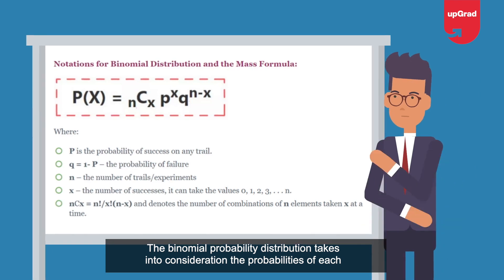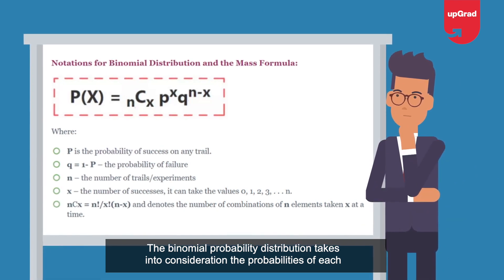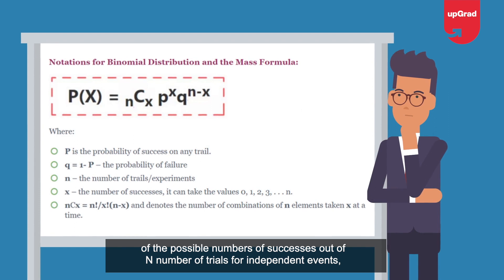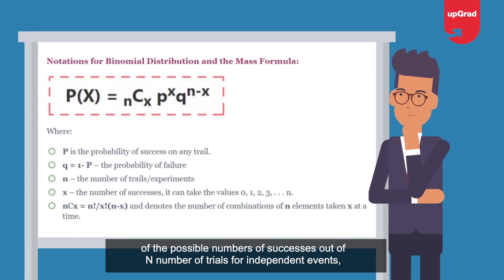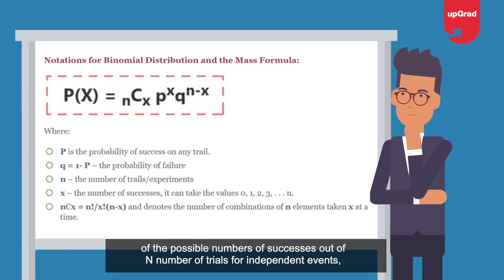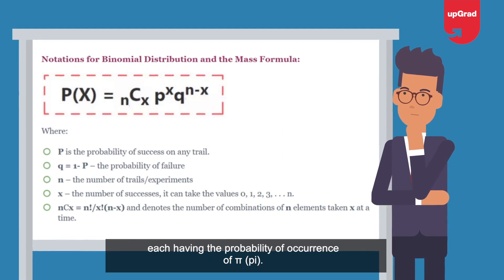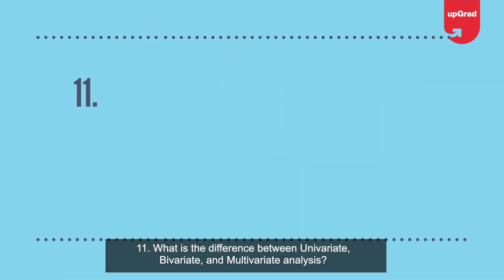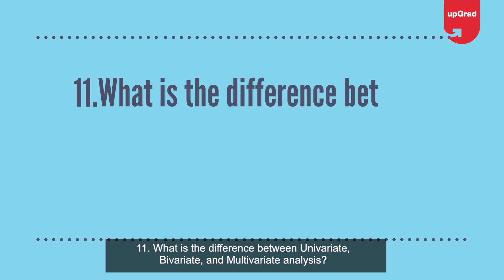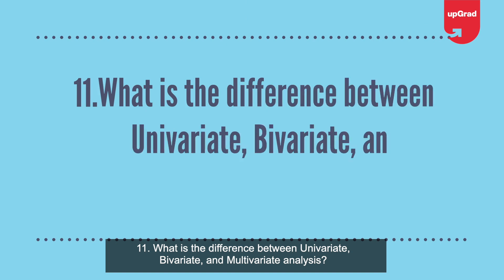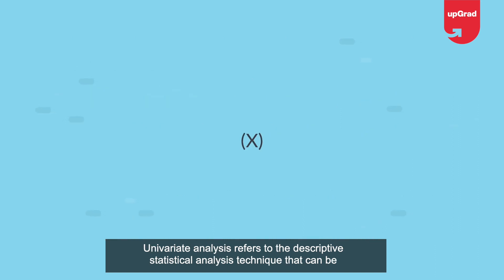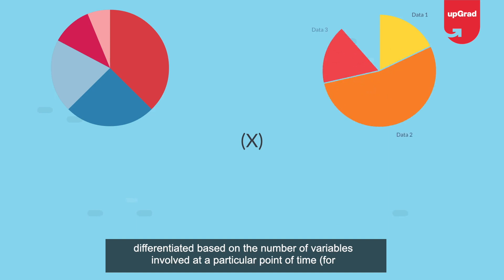Question 10: What is the binomial probability formula? The binomial probability distribution takes into consideration the probabilities of each of the possible numbers of successes out of n number of trials for independent events, each having the probability of occurrence of p.